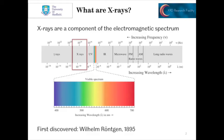X-rays are a component of the electromagnetic spectrum. We can see them at the high energy region here, sandwiched between gamma rays and ultraviolet. As we move to higher wavelengths, we go through visible light, through infrared, microwave, and into radio waves.